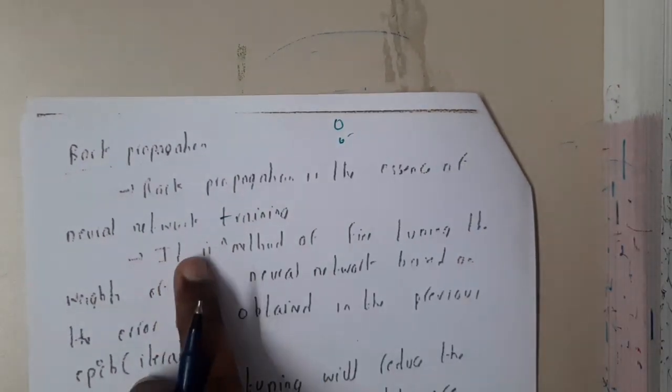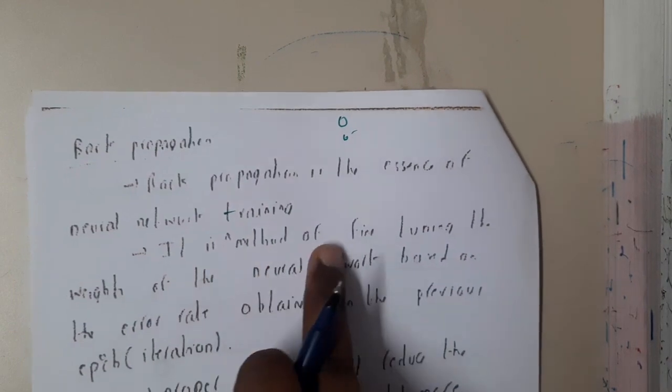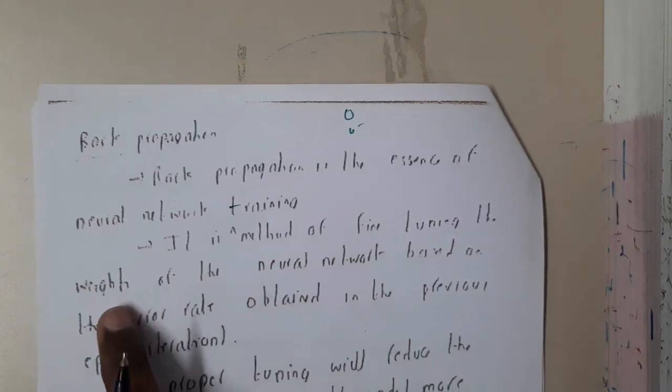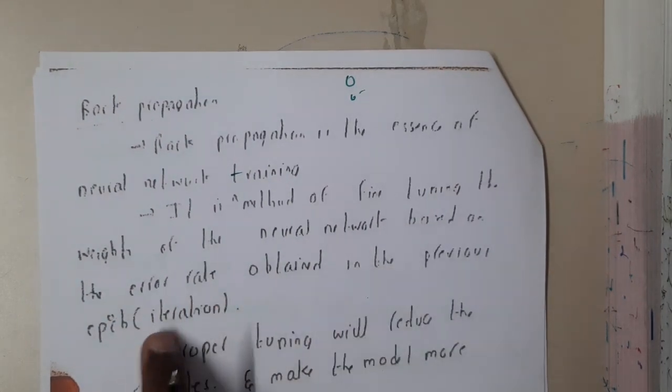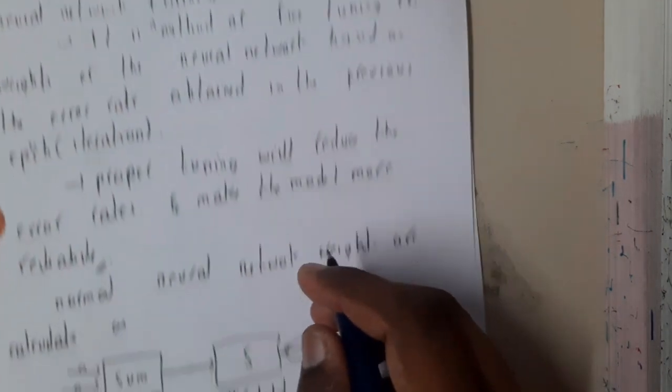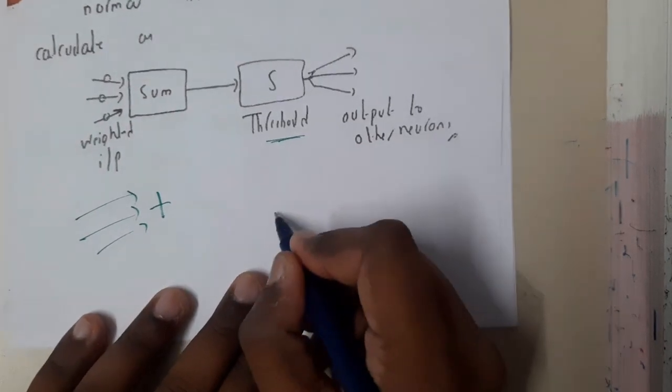Backtracking is essential for neural network training. It is a training method of fine tuning the weights of the neural network based on the error rate obtained in the previous loop. Basically, assume in this way: you are solving some problem.